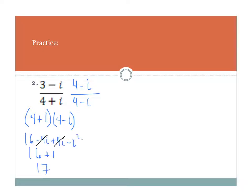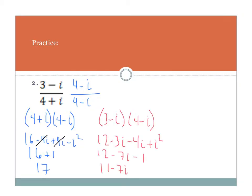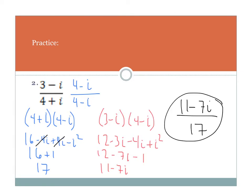Now I'm ready to work on my numerator: 3 minus i times 4 minus i. Let's foil it out. I got 11 minus 7i — that's my final answer: 11 minus 7i divided by 17. Bada boom bada bing, we're done.